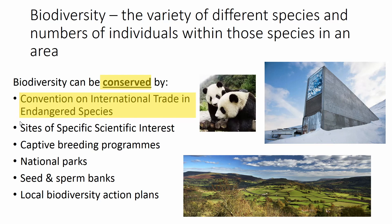Then we have Sites of Specific Scientific Interest, or SSSIs. These are usually more local — areas deemed to hold particular wildlife that needs to be protected. Local ones near Cardiff include Rumney Quarry, the Severn Estuary, and even Flatholme Island, which you can visit down in the bay.